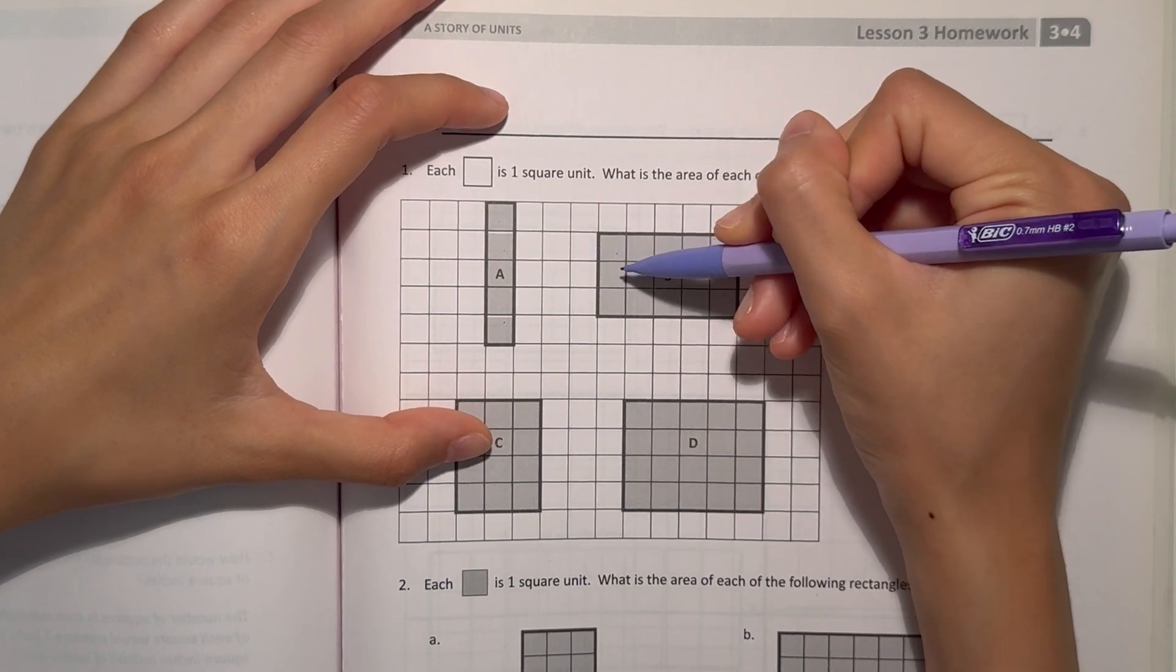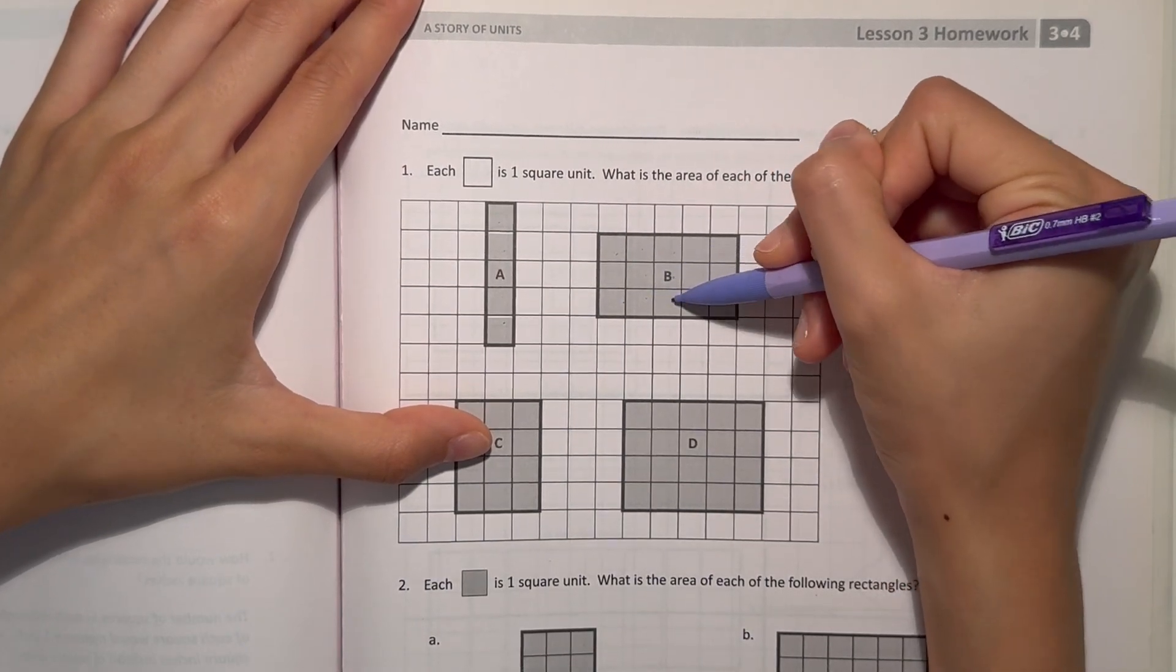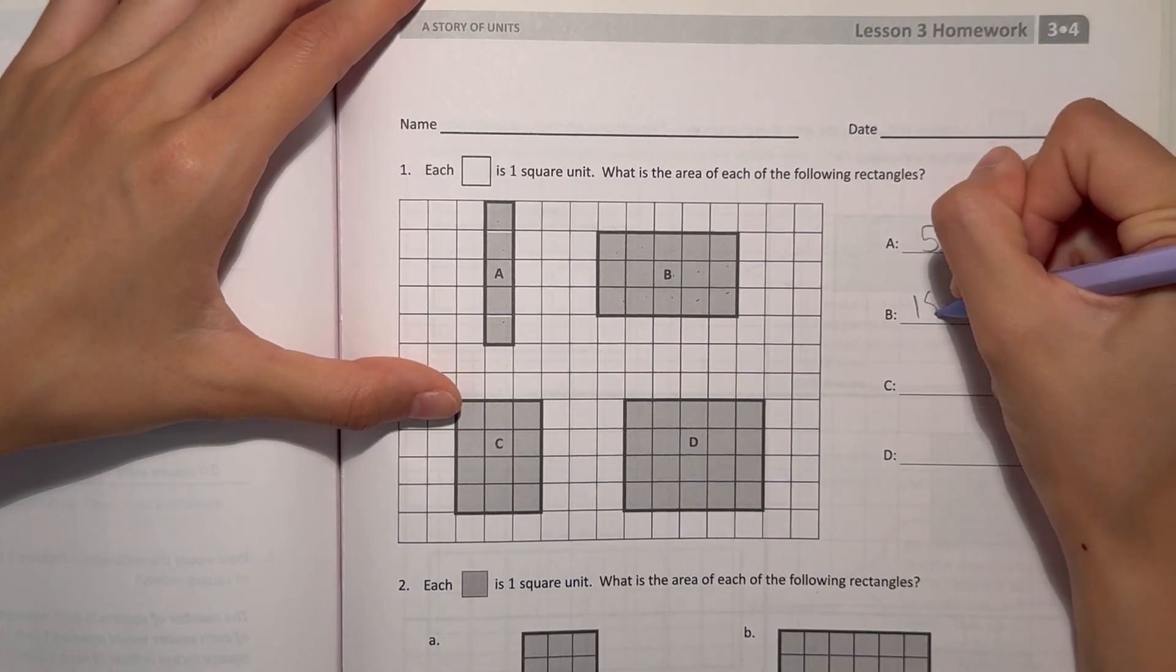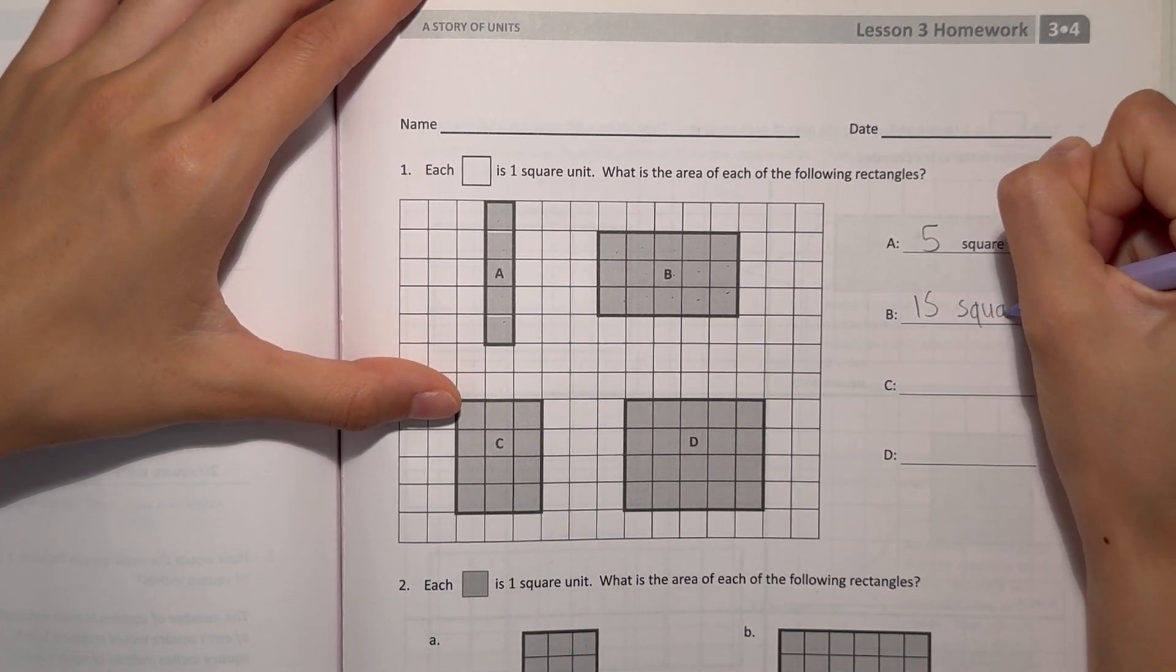On B, we have 1, 2, 3, 4, 5, 6, 7, 8, 9, 10, 11, 12, 13, 14, 15. So 15 square units.